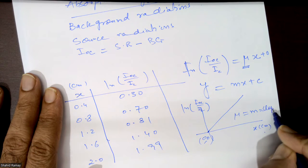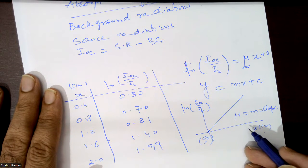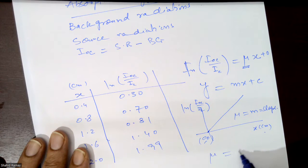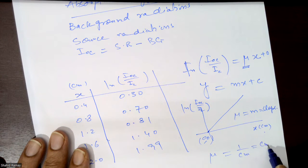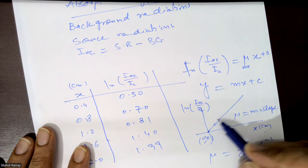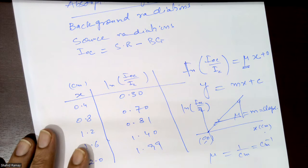Here mu is equal to m, and m is your slope. So if we find the slope, we find mu. The units of mu are 1/cm, or centimeter minus one. You take two points on the line to find the slope.